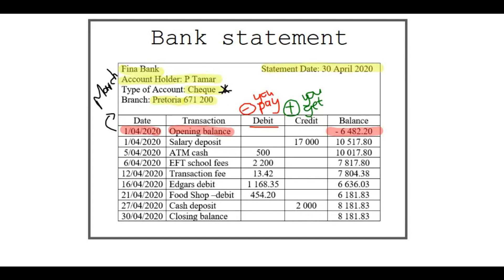On that same day, on 1 April, there was a salary deposit — he got his salary paid to him, and it's a credit amount of 17,000.